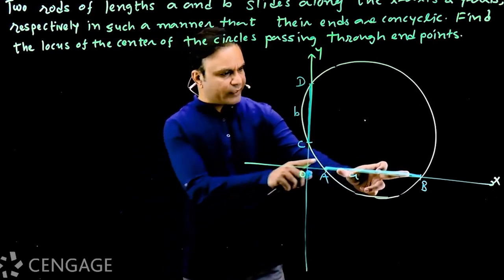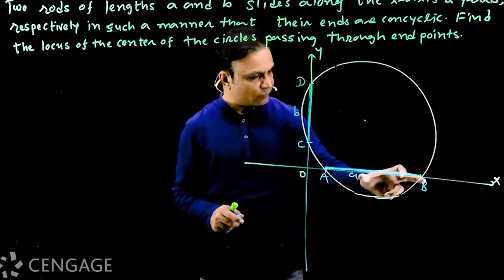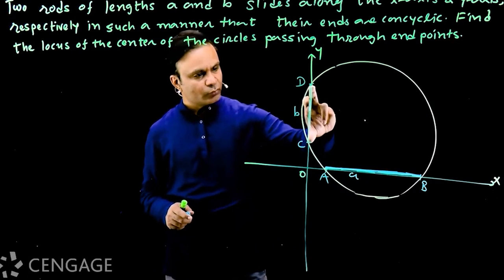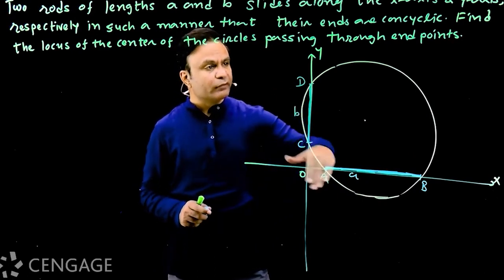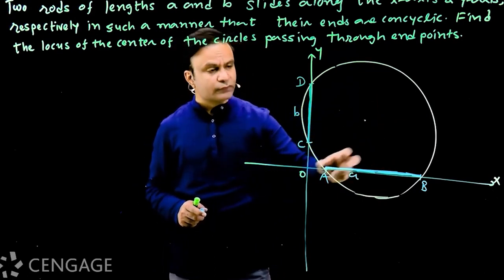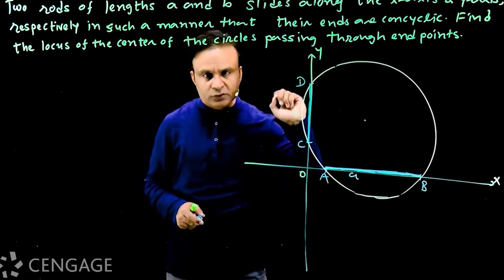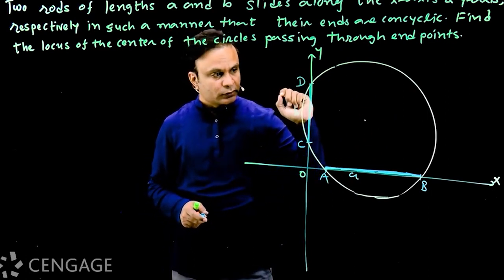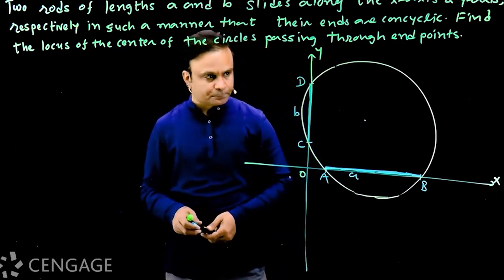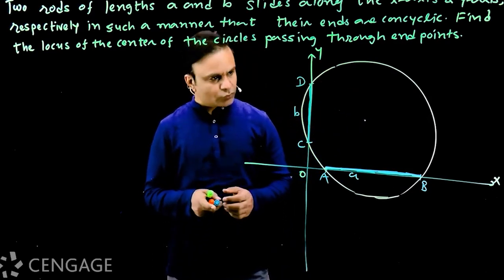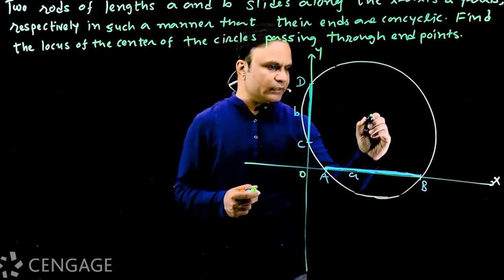You can see that these two endpoints are not fixed — they are sliding, so they are variable endpoints. These two points are also variable endpoints. So we have a variable circle passing through these four points, and in that case the center is also variable. We have to find the locus of this center. So let's assume this center as point P(h, k).